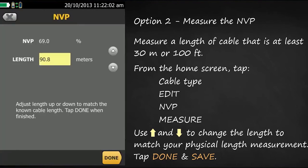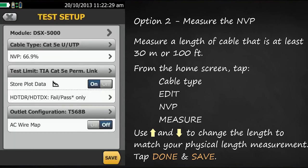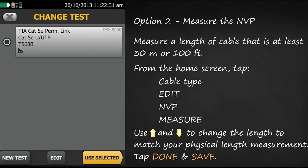With my MVP set at 69%, the tester thinks the length is 90.8 meters. Actually, the length of my link is 88 meters. So I'm going to change the length so it says 88 meters, and you'll notice the MVP value is also changing at the same time. The measured MVP of this cable is 66.9%. Tap done, save, and use selected.